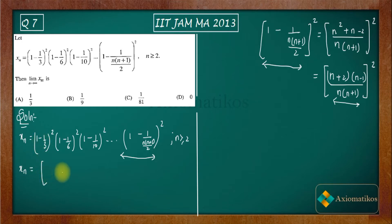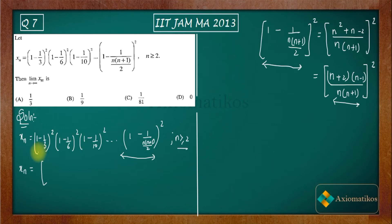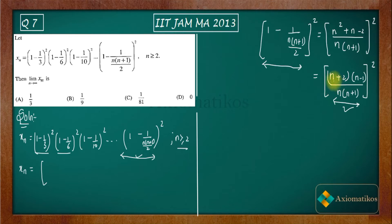If you place n = 1, you get 1 - 1 = 0, which is why they start from n = 2. If you place n = 2, you get 2·3/2, so the 2 cancels and you get the first term. If you place n = 3, you get the second term. So we can write every term in this new factored form.